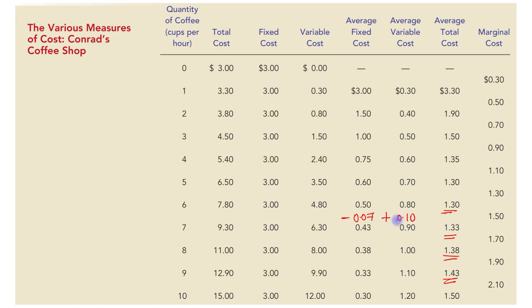We can see that the increase in AVC is greater than the decrease in AFC, and that is the reason it leads to an increase in ATC of about 0.03. Again, if we see: AFC is declining by about 0.05, and AVC is increasing by 0.10. So again, the increase in AVC dominates the decrease in AFC, and that is the reason ATC is also increasing.